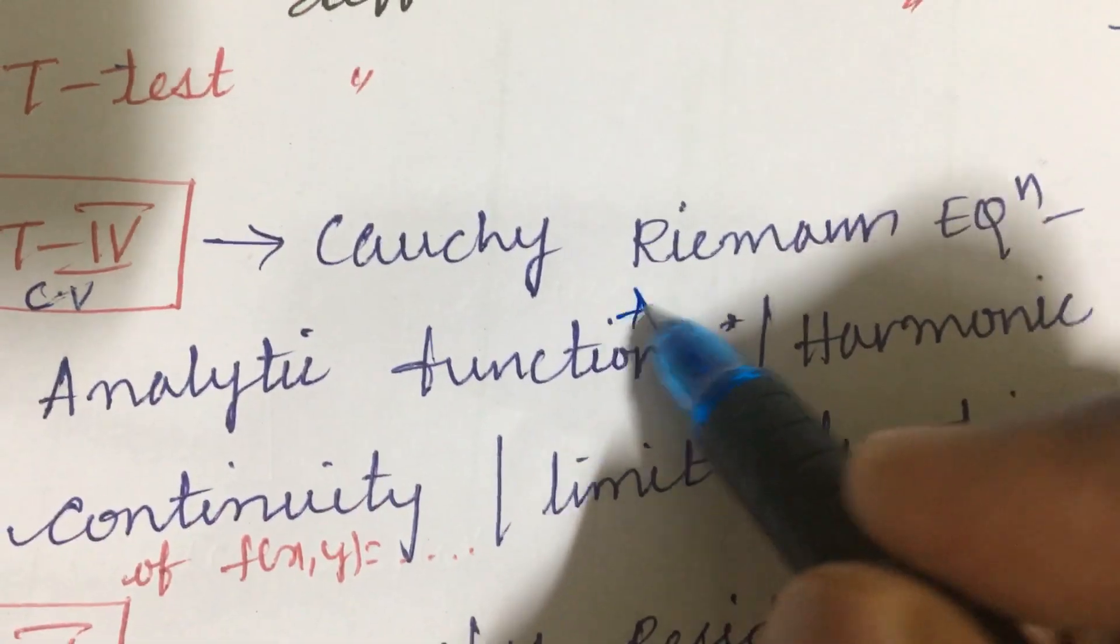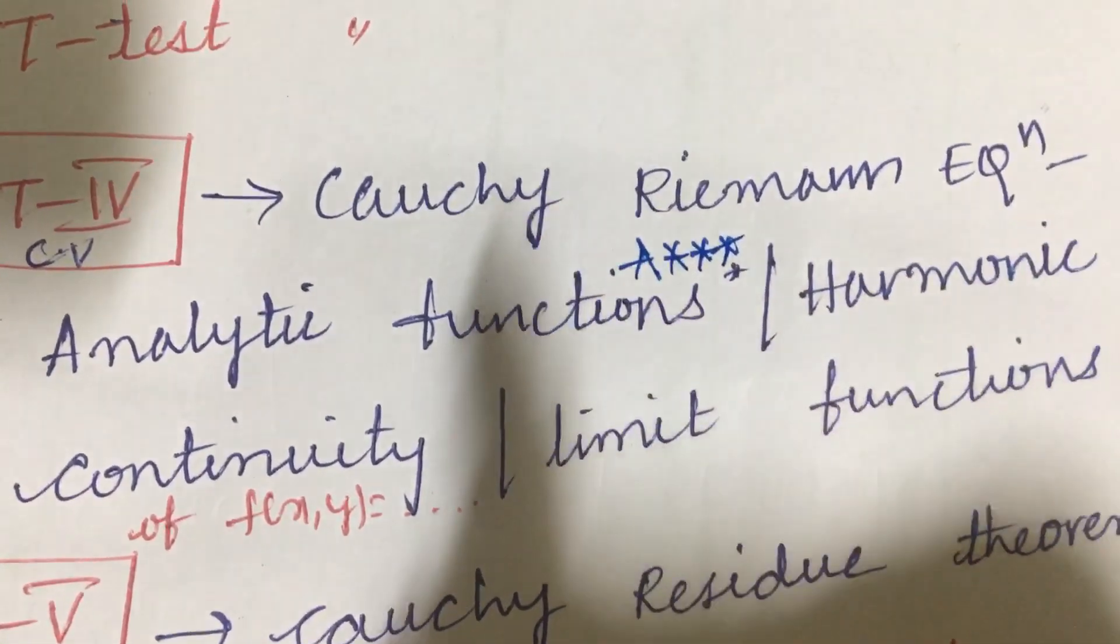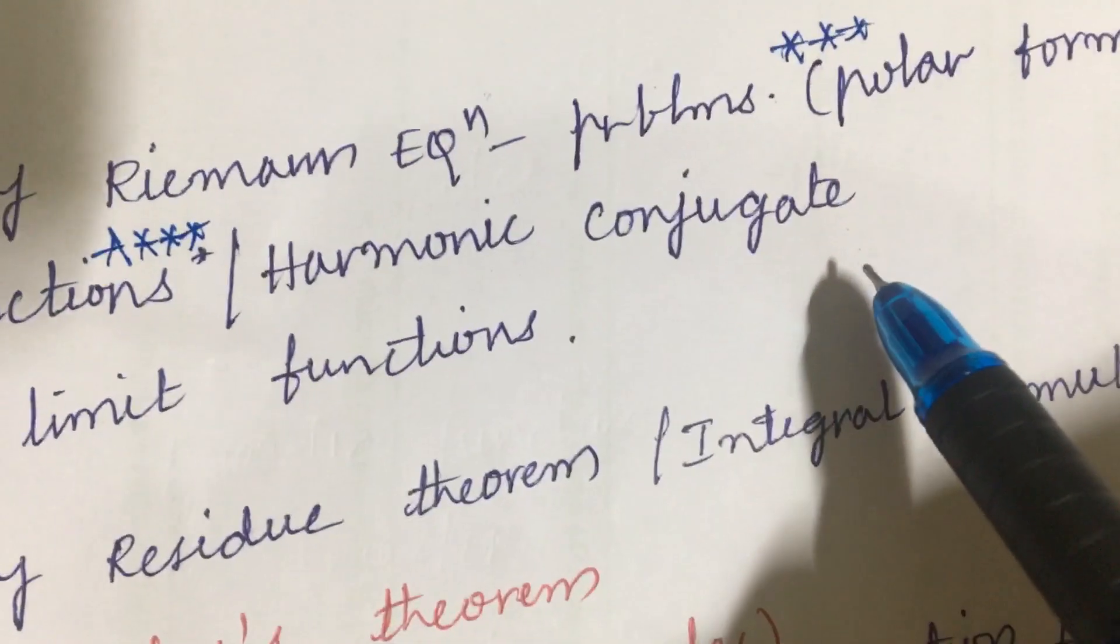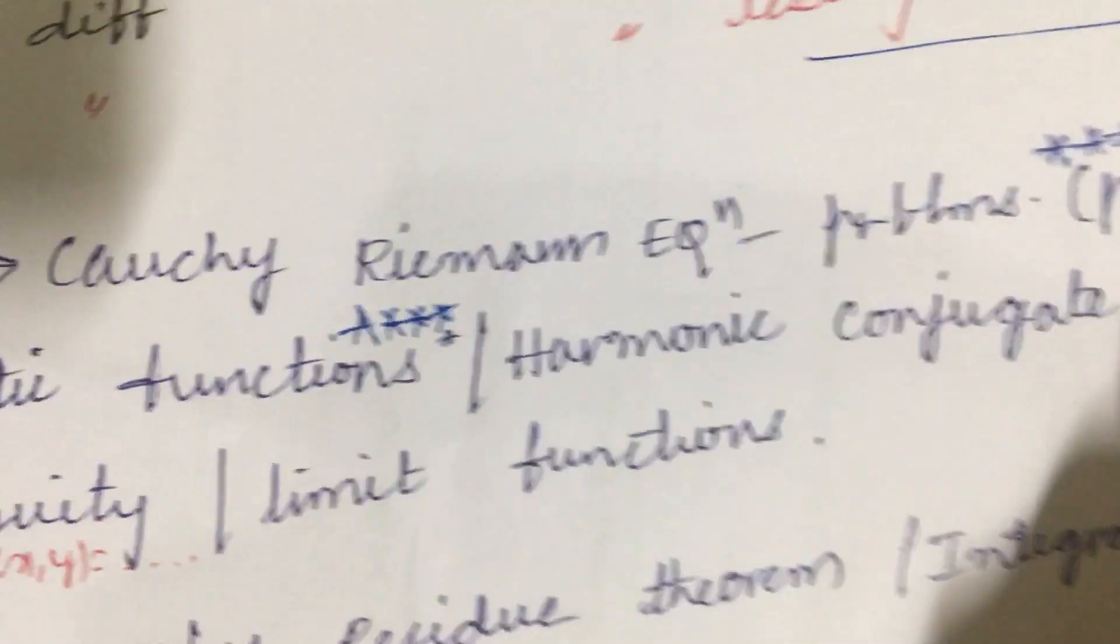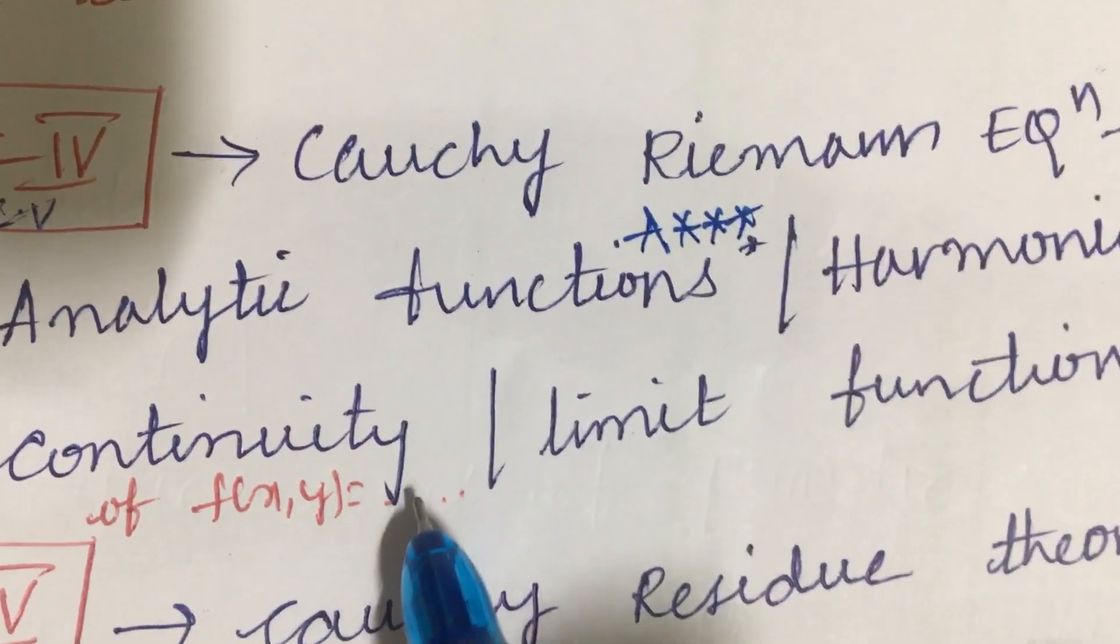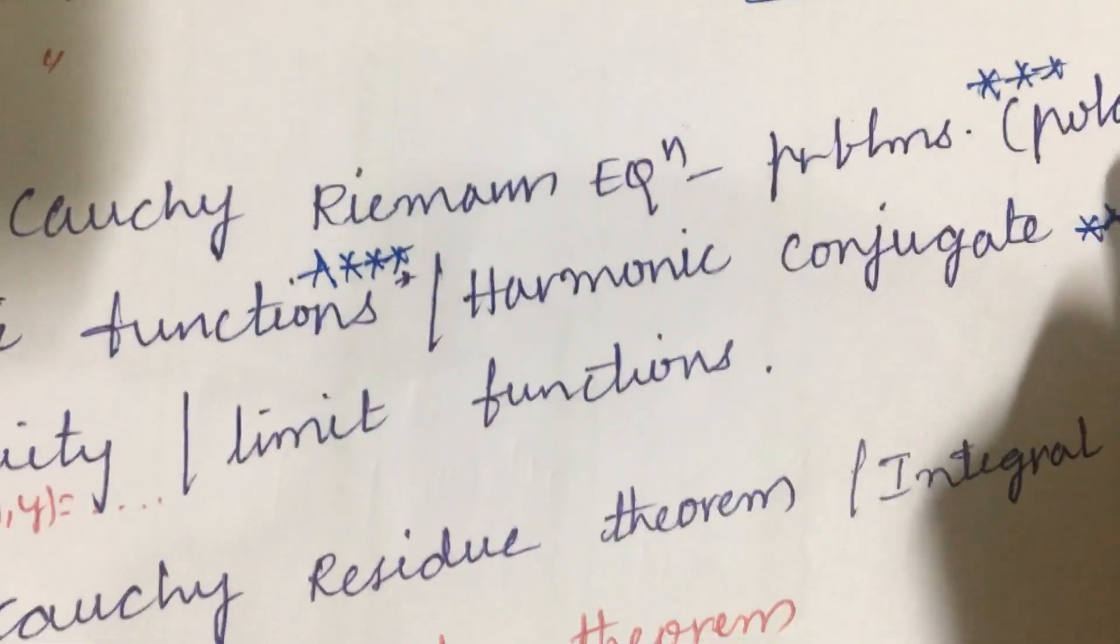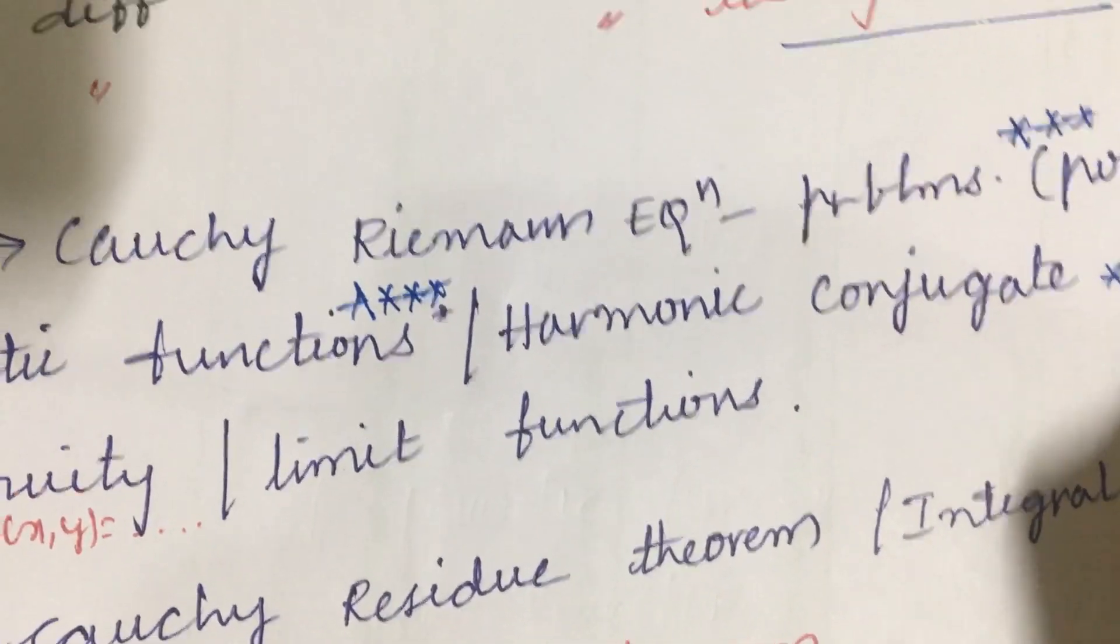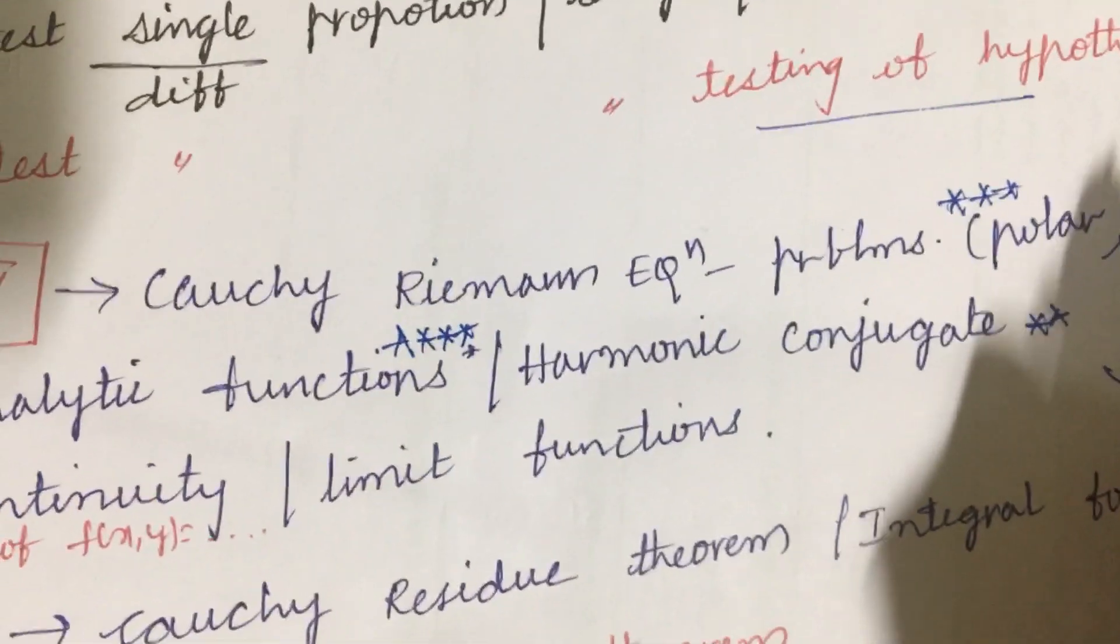Analytical functions is a very important question. You need to work out whether it is analytical or not, and the related harmonic or harmonic conjugate is also one of the important questions. And the continuity of f of xy for the given relation you need to work out, and the limit functions. And from this concept you are going to get a question 5 or 4.5 as well as the fifth question.